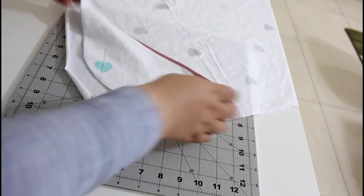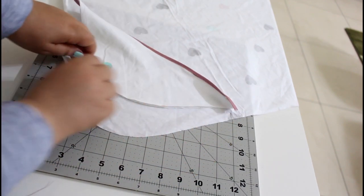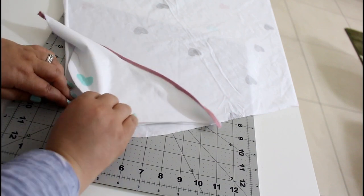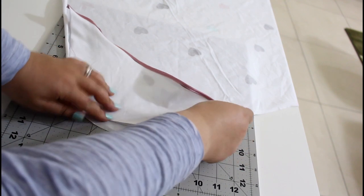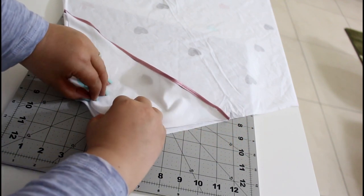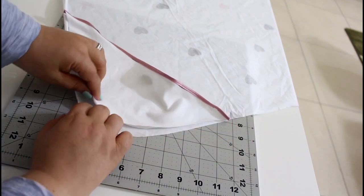Now we will just align it with one of the curved sides of the blanket. And we will do all around the blanket the same we have done with the hoodie piece.